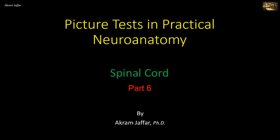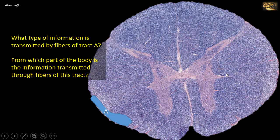Now I will deal with this spinal cord. What type of information is transmitted by fibers of tract A, and from which part of the body is the information transmitted through the fibers of this tract?